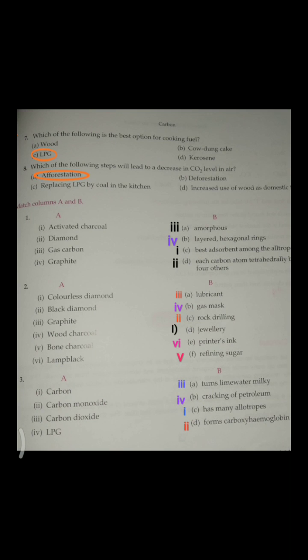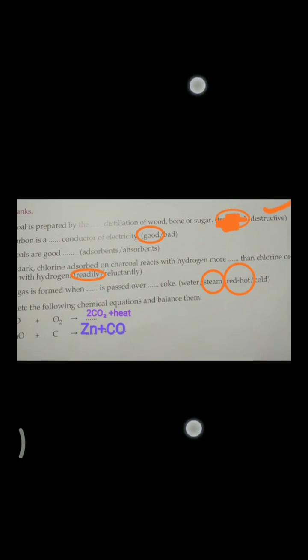Third, first one: carbon has many allotropes. Carbon monoxide forms carboxyhemoglobin. Carbon dioxide turns lime water milky. LPG - cracking of petroleum.